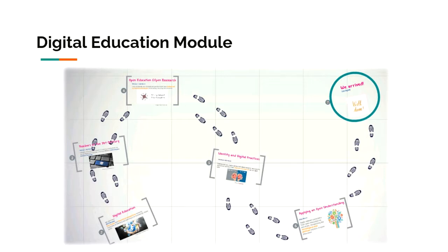In this slide, it's possible to see the trajectory plan for this model, starting with the concept of digital education, moving forward to teaching in the 21st century. After that, we analyzed open education and open research as a significant dimension of digital education. Therefore, through all these analyses, we moved on to digital identity and individual practices. In the fifth session, we reflected on how we could get an open understanding of the key issues analyzed in the previous sessions.